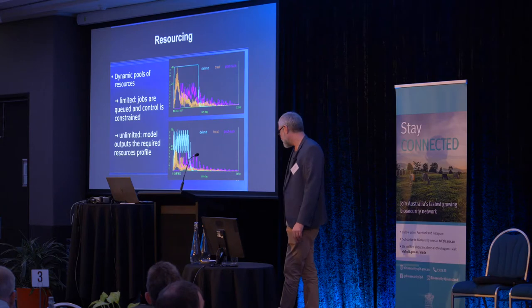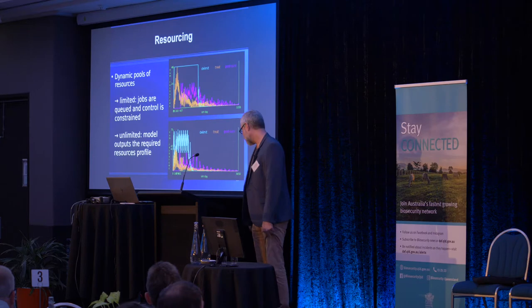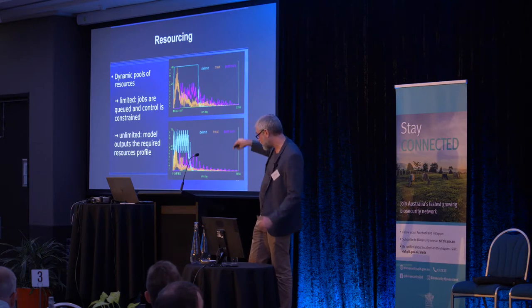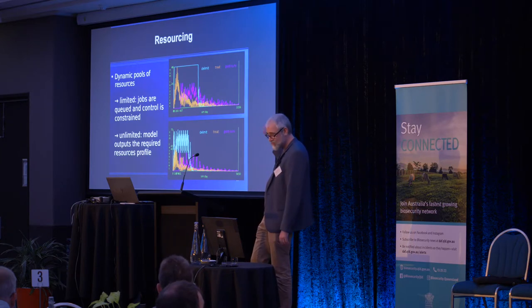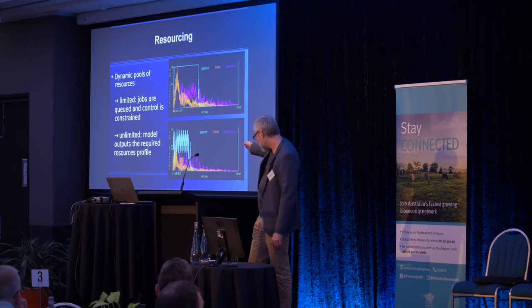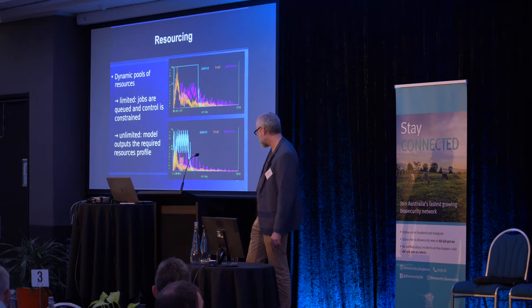We can also unlimit the resourcing in the model — in that case, the model tells you what resourcing was required. The cyan line shows delimiting surveillance resources capped at 40, which impeded our response; for that scenario it took 20 years to control. In the bottom comparison, I let it run free — it peaked at about 75 of these resources for delimiting, and eradicated in about 10 years. These are dials you can play with as a model user.